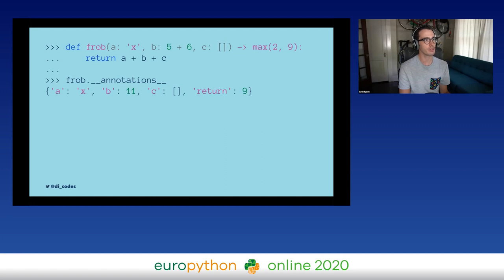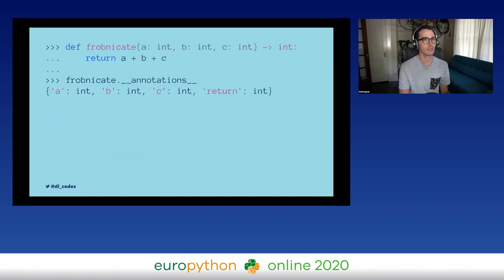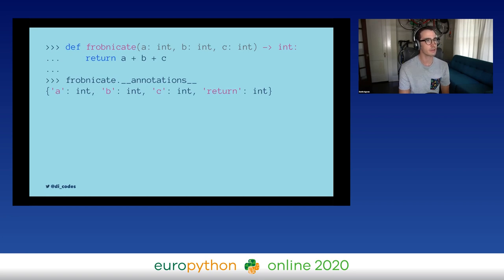The PEP included a bunch of ideas about what annotations could be used for, and they all kind of boiled down to typing and maybe some documentation. This allowed us to write a function and pass a class or keyword as the annotation. When accessing `__annotations__`, it would tell us what we had written as annotations for those variables and the return type. But that's all it gives us — it doesn't give us a way to evaluate whether the function was being used correctly, and it only lets us annotate functions, not arbitrary variables.